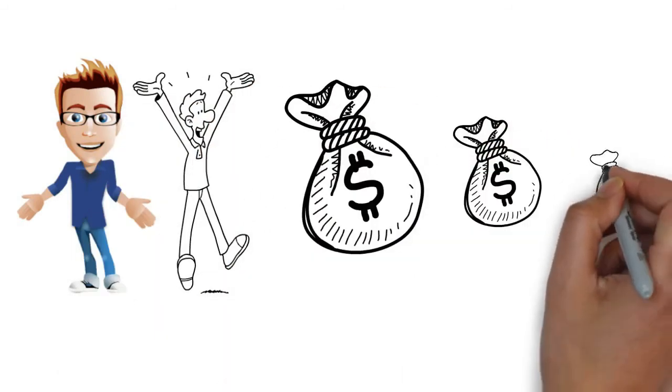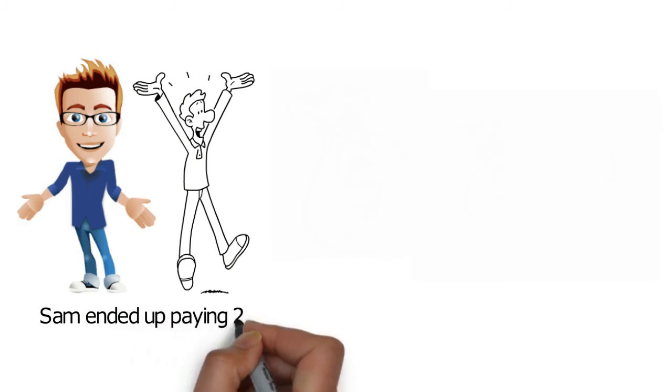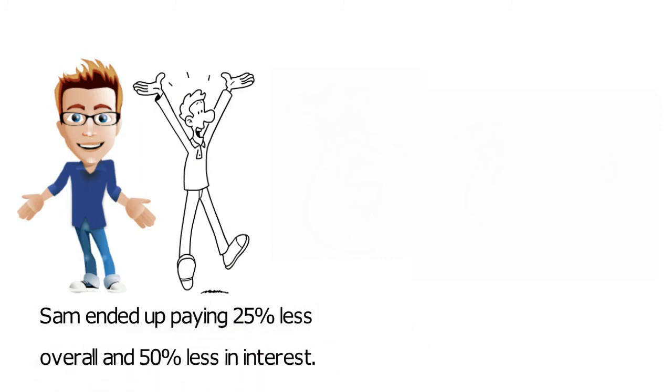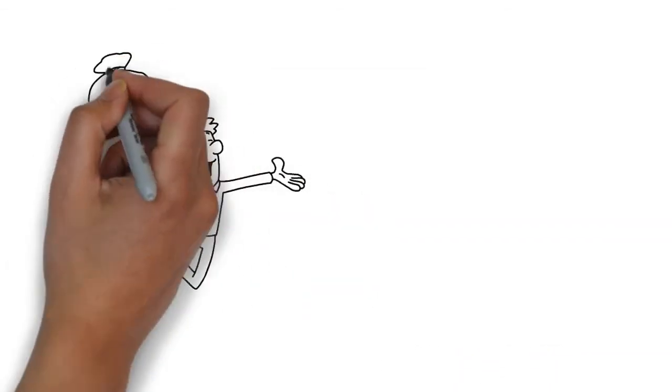Sam and Dave agreed to use the avalanche method instead, where they pay off the highest interest rates first while only paying off the minimum payments on the rest. This meant Sam ended up paying 25% less overall and 50% less in interest. He could also pay it off much quicker. Sam made a commitment to use 10% of his income to pay off the debt, and he would immediately increase his investments once complete.